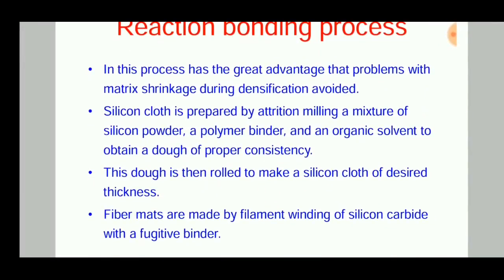An advantage of this process is that problems with matrix shrinkage during densification are minimized. Silicon cloth is prepared by attrition milling a mixture of silicon powder, a polymer binder, and organic solvent to obtain a dough of proper consistency. This dough is then rolled in a rolling machine to make a silicon cloth.